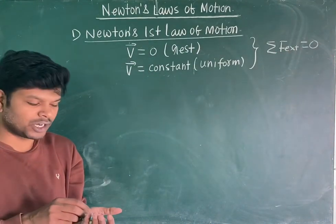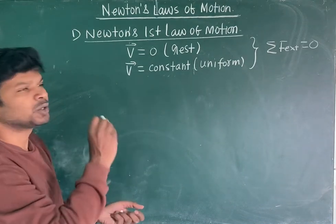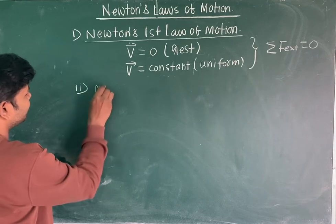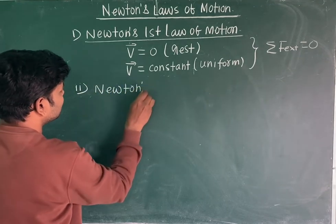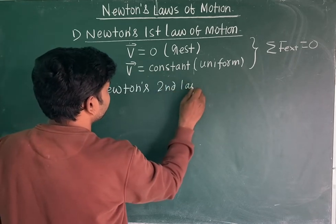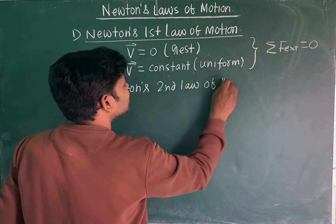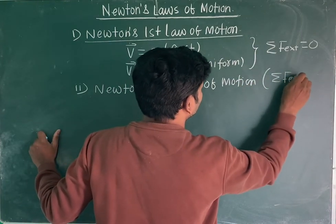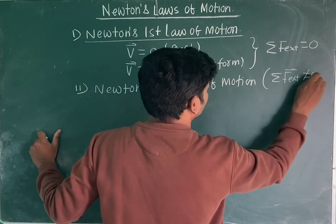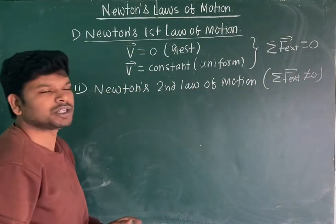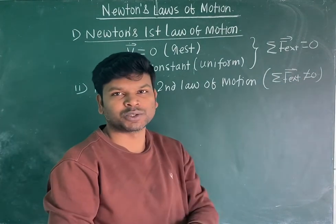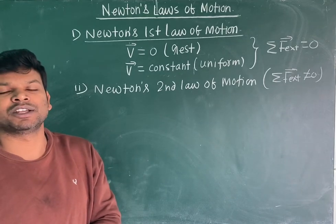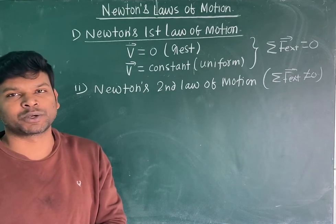When the net external force is not equal to zero, we come into Newton's second law of motion. Newton's second law of motion states that if the net external force is not equal to zero, then if there is a net external force acting on a system or any particle or any object, there will be a change in momentum with respect to time.